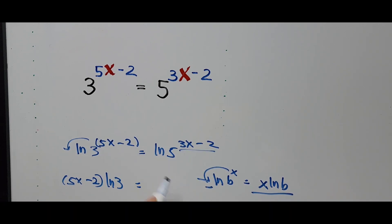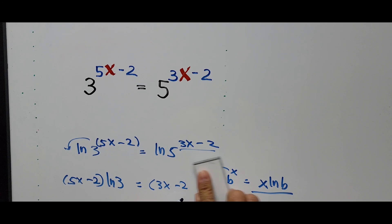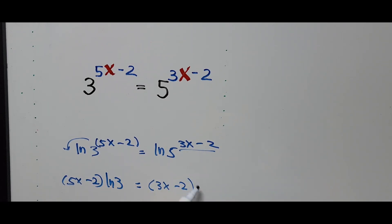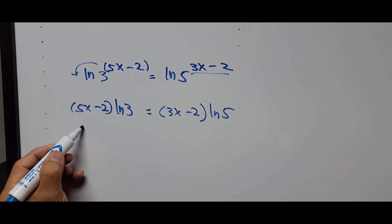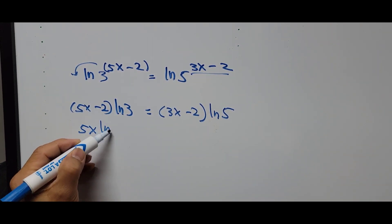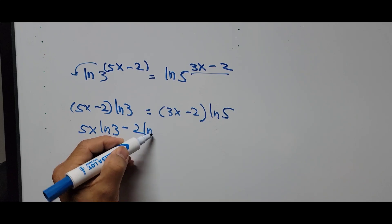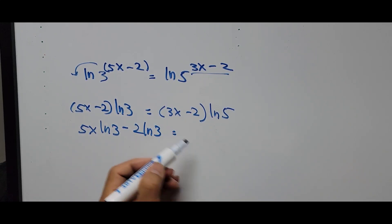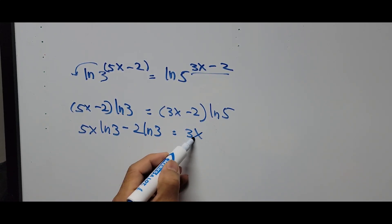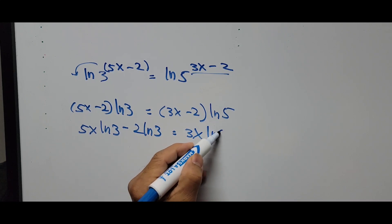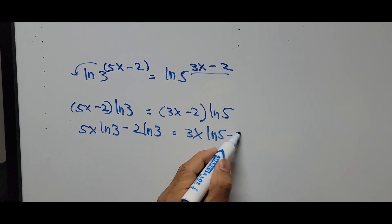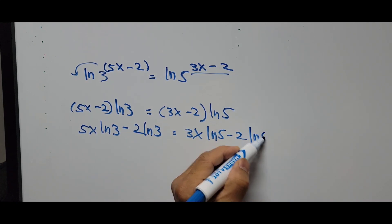So we now have: 5x minus 2 times ln of 3 equals 3x minus 2 times ln of 5. Expanding both sides gives us: 5x ln of 3 minus 2 ln of 3 equals 3x times ln of 5 minus 2 times ln of 5.